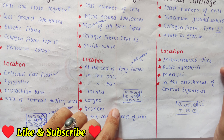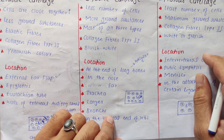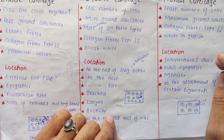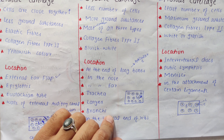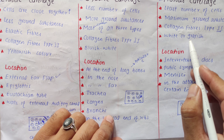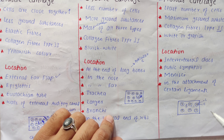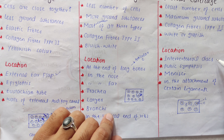ہم already discuss کر چکے ہیں کہ دیگر cartilage میں زیادہ تر collagen type 2 پایا جاتا ہے، اور type 1 bone میں پایا جاتا ہے۔ لیکن fibrous cartilage میں type 2 کے ساتھ type 1 collagen fibers بھی پائے جاتے ہیں۔ اس کا color white اور grayish ہے۔